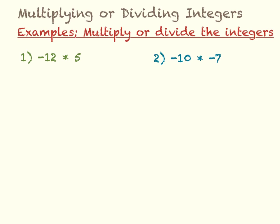Multiplying and dividing integers. Let's jump right into some examples of multiplying and dividing. First one, we have negative 12 times 5.